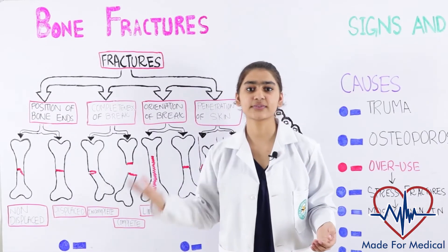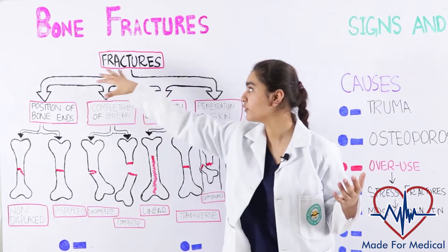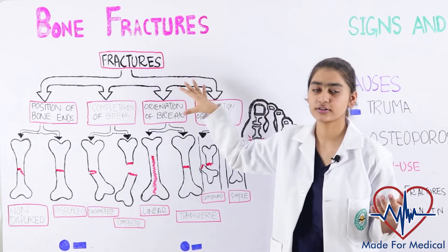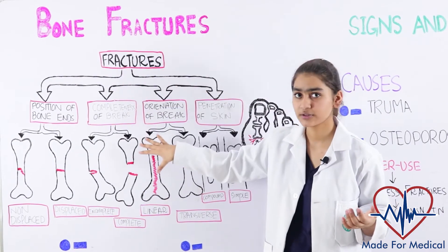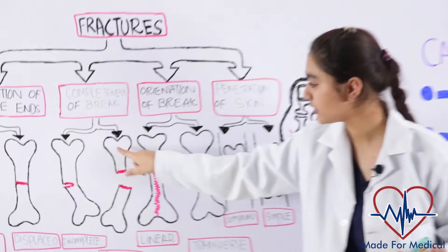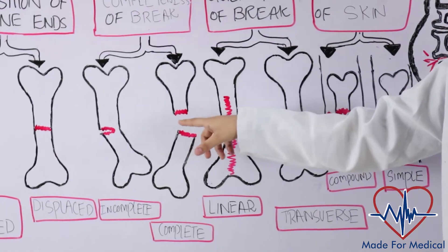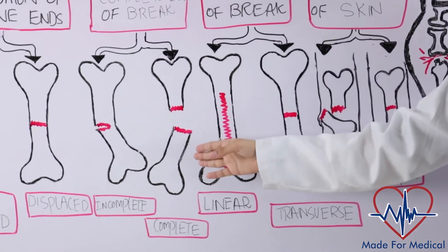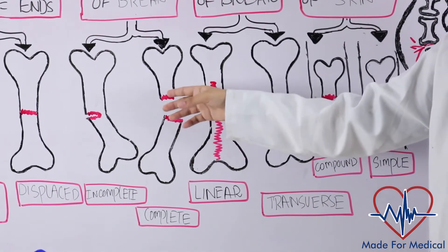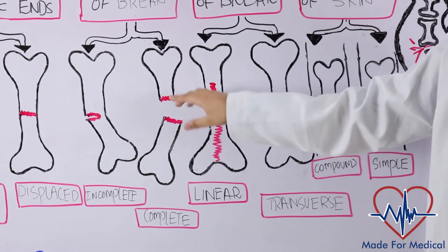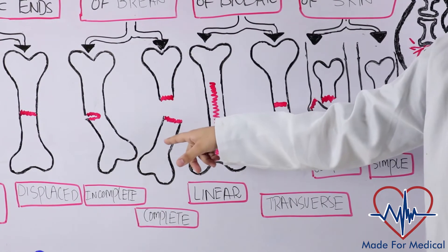First things first, what is a bone fracture? It's a medical condition where the continuity of the bone is broken, like here in this diagram. We have a bone that doesn't look normal and is broken, so now we have two bones.